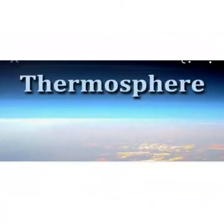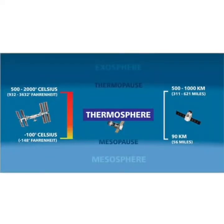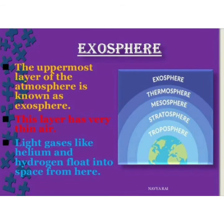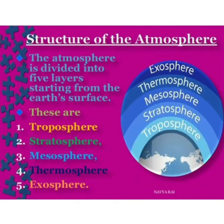Next we have the thermosphere, where there is a rapid increase in temperature. As we go farther upward, the air is so thin that the temperature can go up to 1200 degrees Celsius. Our international space stations are located in this layer, which includes the ionosphere, and this helps in radio transmission. The exosphere is the upper layer of the atmosphere with very thin air, mainly including light gases like helium and hydrogen, extending into outer space. These are the five layers of the atmosphere.